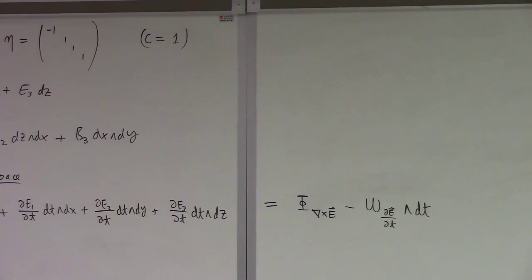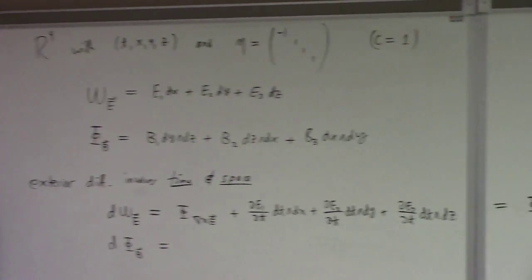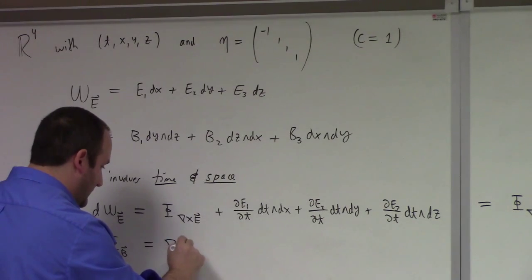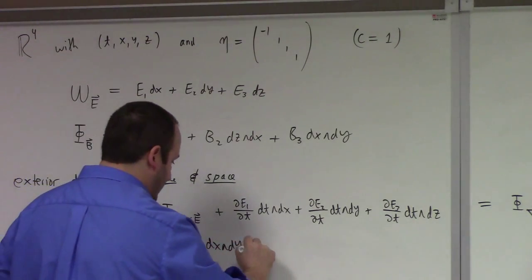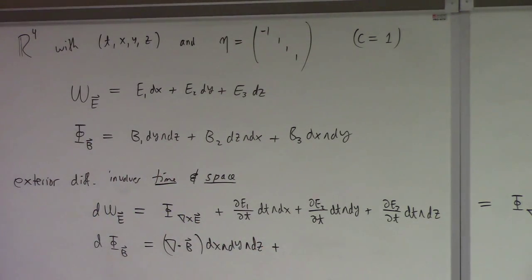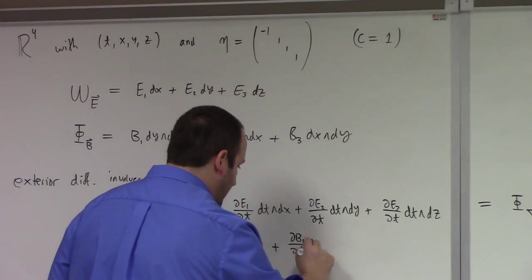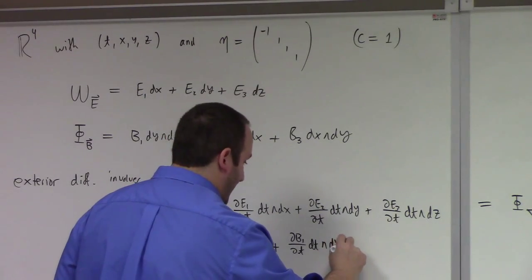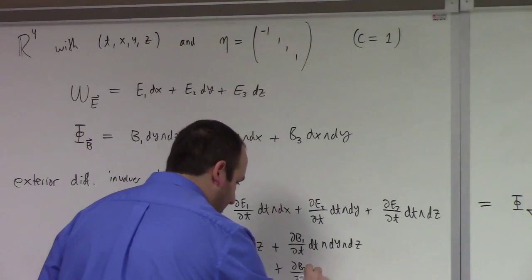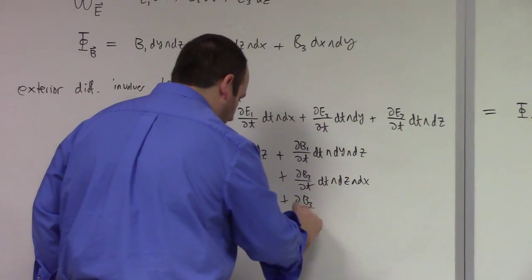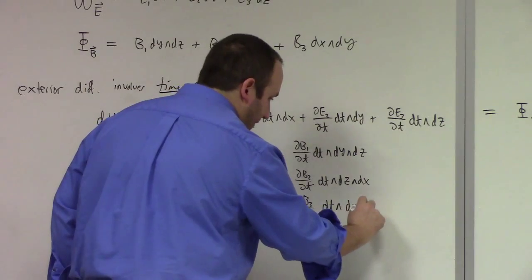What would the exterior derivative of the flux form of B look like? Well, first of all we have the term we talked about before in three dimensions - we have the divergence of the magnetic field times the volume form dx wedge dy wedge dz. But then I also have time derivative terms. I've got partial B_1 partial t, dt wedge dy wedge dz, plus partial B_2 partial t, dt wedge dz wedge dx, plus partial B_3 partial t, dt wedge dx wedge dy.